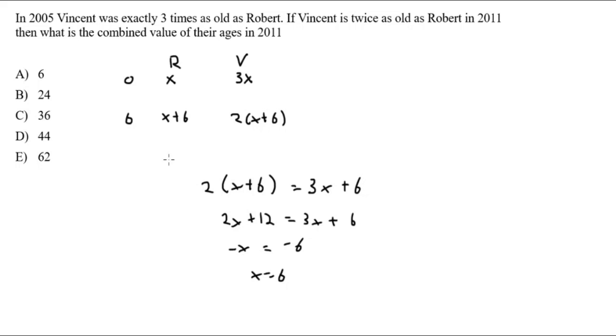The question here is asking us for the combined value of the ages of the two people in 2011. So, what are the ages in 2011? Well, it's X plus six for Robert. And we worked out that X is six. So, it's going to be 12. And what is the age for Vincent? Well, X plus six. So, that's going to be six plus six. So, 12 times two. That's going to be 24. And that is equal to 36. So, that combined ages in 2011 is 36. Which is answer C.